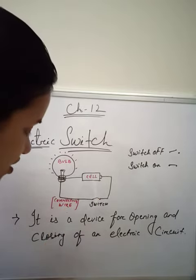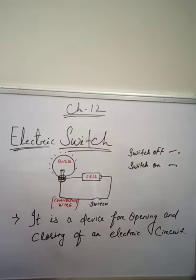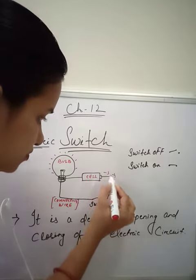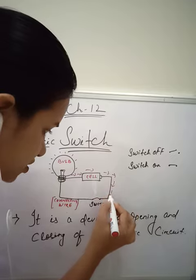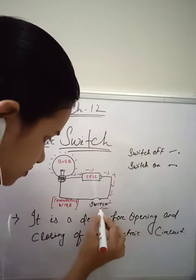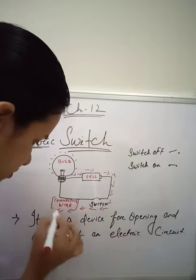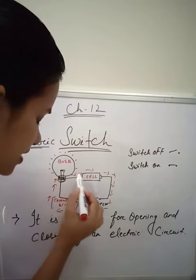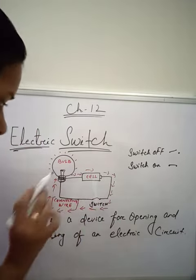By switching on, the path becomes closed and hence current is flowing from one end to another. The current is going from positive to the negative end — that is, coming from the bulb to the cell, from the positive end to the negative end.